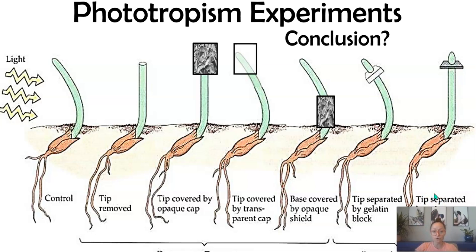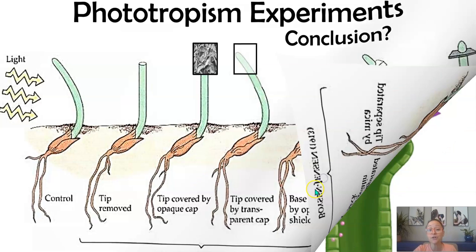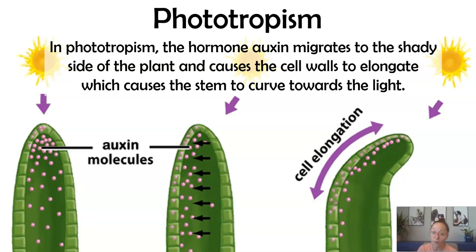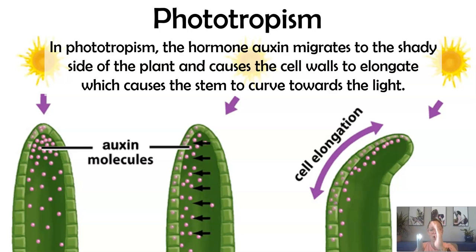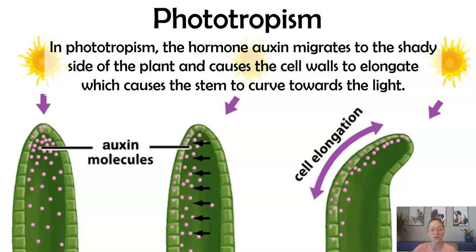The conclusions from this experiment were that some kind of chemical produced in the top of the growing stem, when exposed to light, causes it to curve and grow towards the light. Further experiments over the decades discovered this hormone is called auxin. Auxin moves to the shady side of the plant, causing cells on that side to elongate. By stretching out, those cells cause the plant to curve towards the light.